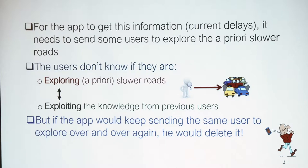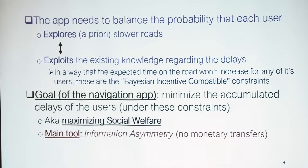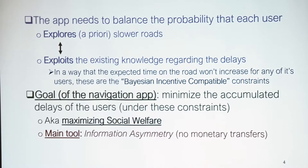The one thing the app must ensure is that it won't send the same user to explore again and again. The app needs to balance between the probability that each user explores the a priori slower roads and exploits the existing knowledge regarding current delays. This must be done so that the expected time on the road won't increase for any of its users — this is what we call Bayesian incentive compatible constraints.